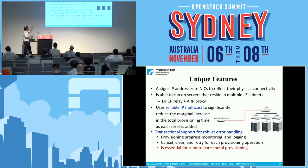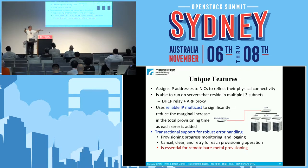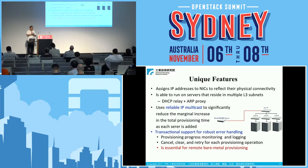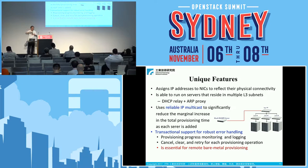The unique features of BMP include: assigning IP addresses to NIC cards according to physical connectivity patterns; running on servers across multiple Layer 3 subnets using DHCP relay for PXE boot across routers; leveraging IP multicast to reduce time required to boot the disposable and first OS; and transactional support — critical for remote operation. If you're a HaaS user provisioning servers and something goes wrong outside the data center, every operation is transactional: either it happens or it doesn't.